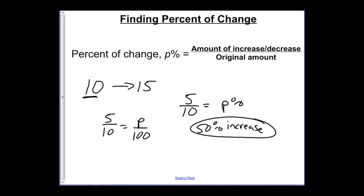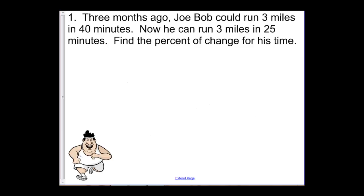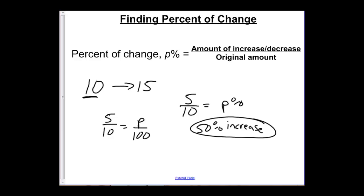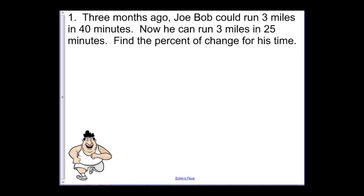Now let's apply that to a problem. Number 1 says 3 months ago, Joe Bob could run 3 miles in 40 minutes. Now he can run 3 miles in 25 minutes, and I want to find the percent of change for his time. When we talk about percent of change, we want to look for the original amount, the new amount, we want to find that amount of increase or decrease, and then we want to find that original amount. Notice the original amount, the beginning. It said 3 months ago he could run this 3 miles in 40 minutes. Now he can run the 3 miles in 25 minutes.